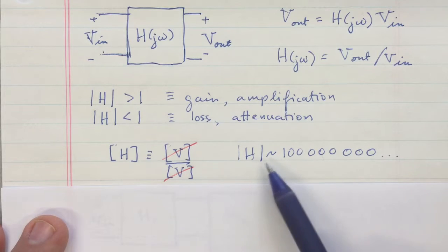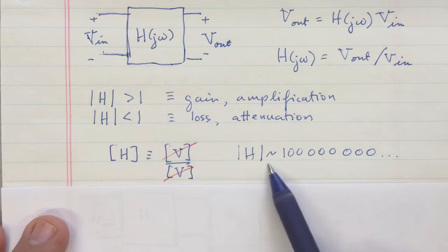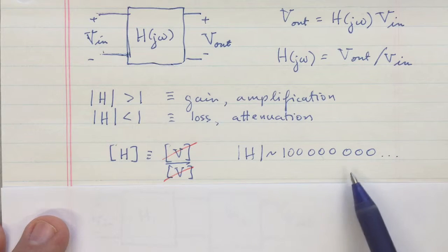Another problem with the transfer function in its current form is that it's not uncommon to have really large numbers, either for the gain or especially for the attenuation.